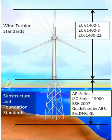IEC 61400 is an international standard published by the International Electrotechnical Commission regarding wind turbines. The 61400 is a set of design requirements made to ensure that wind turbines are appropriately engineered against damage from hazards within the planned lifetime. The standard concerns most aspects of the turbine life from site conditions before construction.